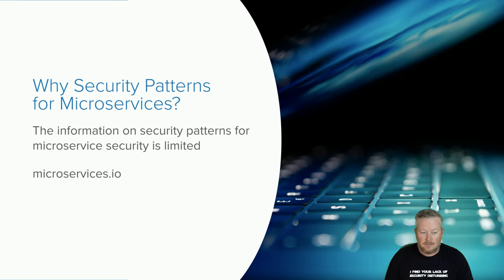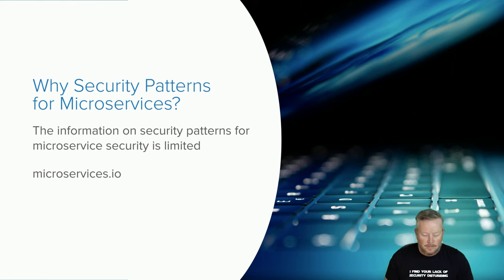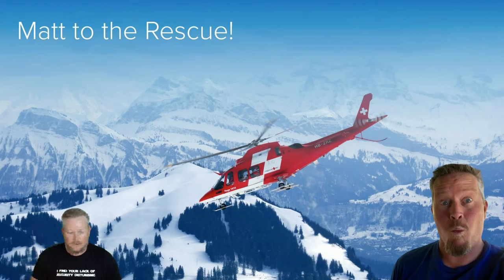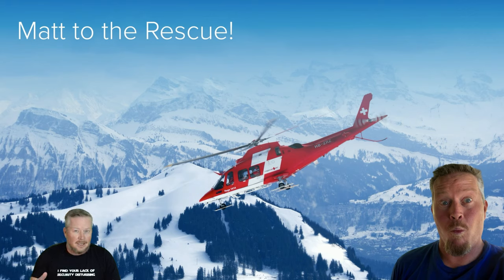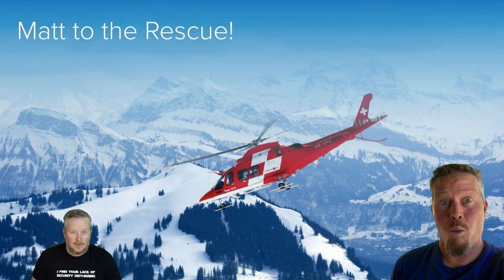Chris Richardson also runs microservices.io, which lists numerous microservices patterns. I noticed that access token is the only item listed under security, which I thought was a little limited. The information on security patterns for microservices should be much broader. So today I'll describe 11 patterns to secure your microservices. Not everyone needs all of these patterns. I also wrote a blog post about this, which I'll reference at the end and list in the description below.